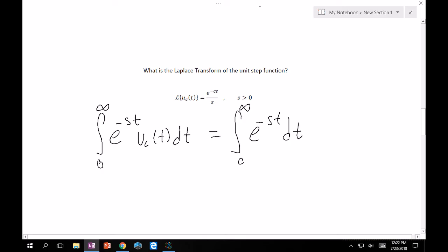And so, taking the antiderivative of this. This is minus 1 over s e to the minus st from infinity to c. Which is the same as 0 plus 1 over s e to the minus sc. And so, therefore, you get the same thing. e to the minus sc over s for s greater than 0. And that would be your Laplace transform.